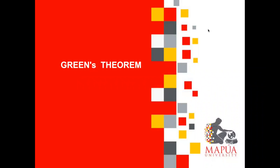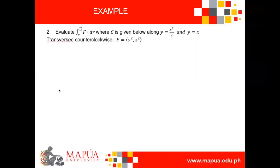I will provide additional problem solving applying the set theorem. Let us have example number two. It says here: evaluate the integral of f dot dr along the curve c, where c is given below along y equals x squared over 2 and y equals x, traversed counterclockwise, and the given vector field f is equal to (y squared, x squared).